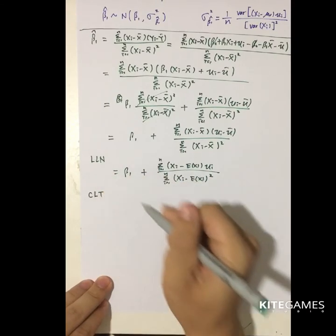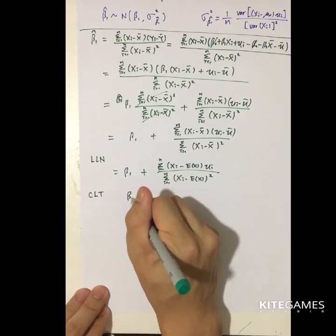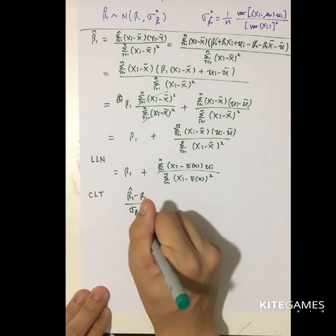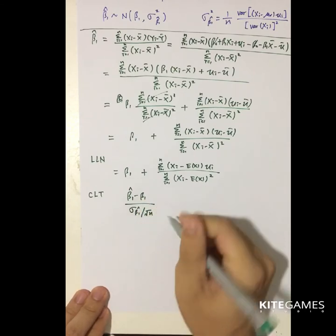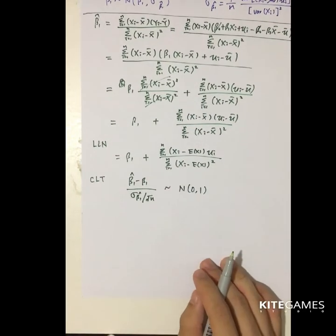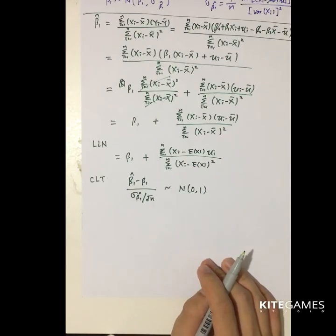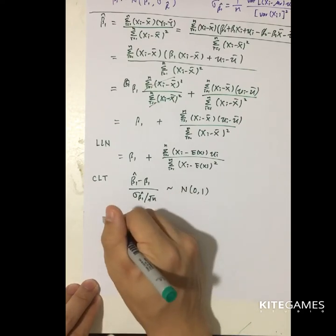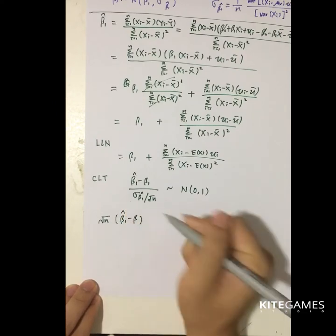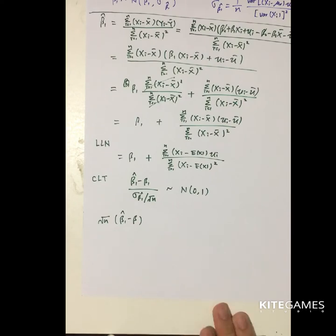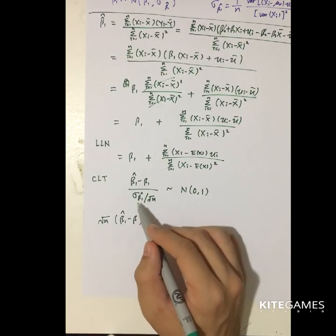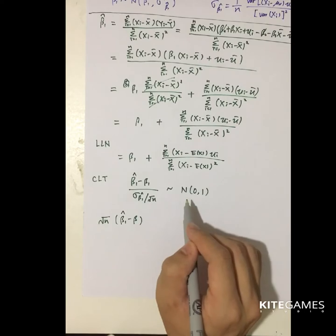By the central limit theorem, we know that (beta 1 hat minus beta 1) divided by the sample standard error will be close to a standardized normal distribution. That means we need to calculate the square root of n times (beta 1 hat minus beta 1). We put this on the left-hand side and derive it by the sample standard, giving us the standardized normal distribution.